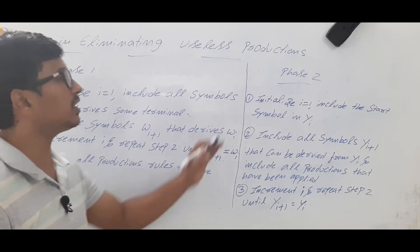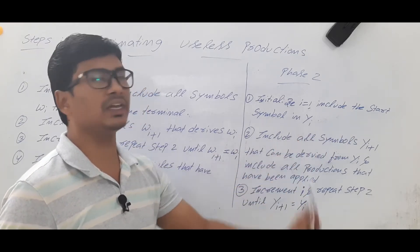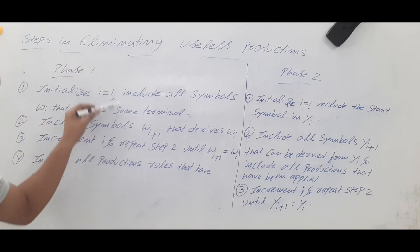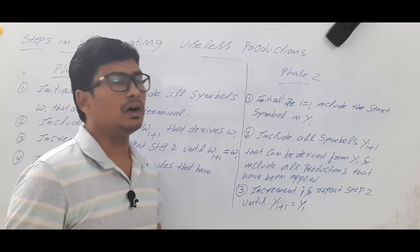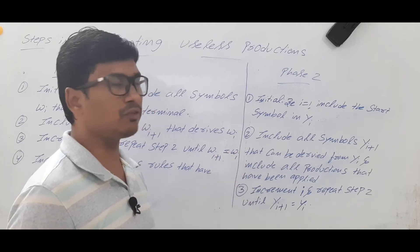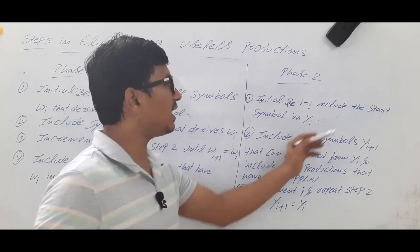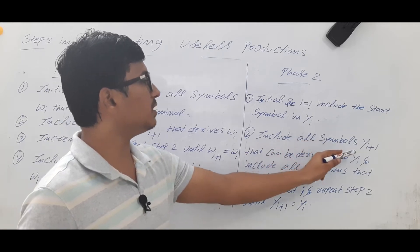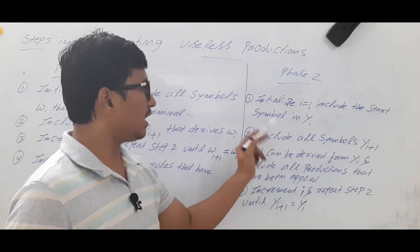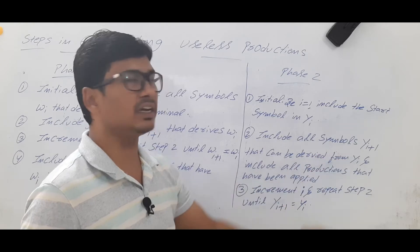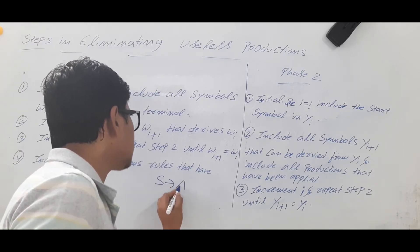Once phase 1 is completed, we start phase 2. Phase 1 eliminates useless productions, and phase 2 eliminates unreachable productions from the start symbol. For phase 2: initialize i equal to 1, include the start symbol in the set Y_i. Then take another set Y_{i+1} and include all symbols that can be derived from Y_i.